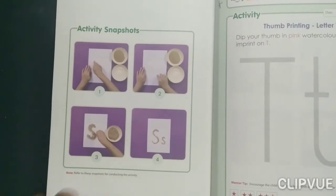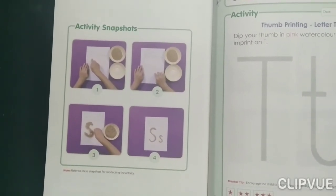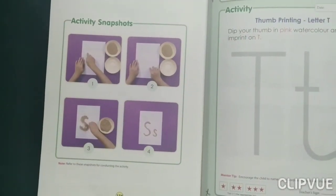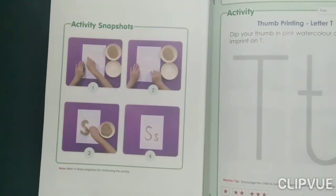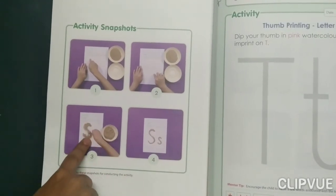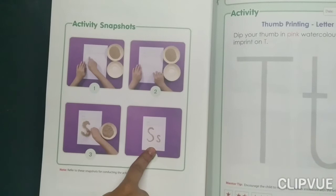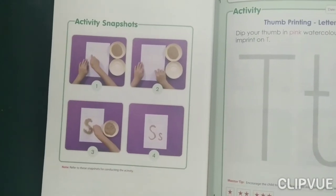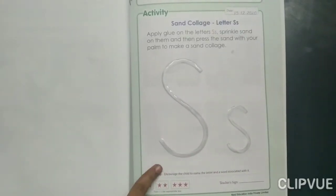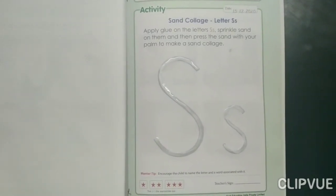These are the snapshots to complete the activity. First, we have to apply the glue on the capital S and small s. Then sprinkle the sand on them, and like this we have to complete this activity. Apply the glue, then sprinkle the sand like this.